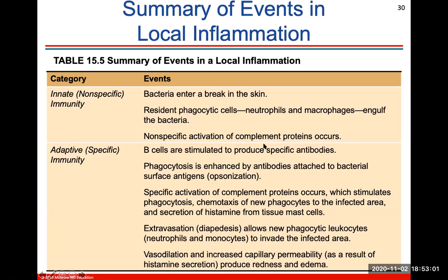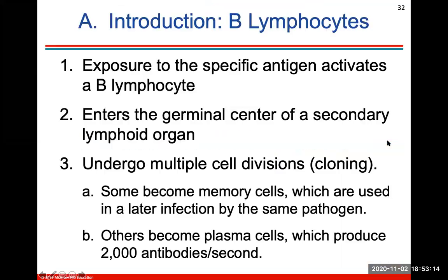This is a great summary of events in local inflammation, looking at both innate nonspecific immunity and adaptive specific immunity. Exposure to an antigen will activate a B lymphocyte, which will enter the secondary lymphoid organ and then undergo multiple cell divisions — we call that cloning.